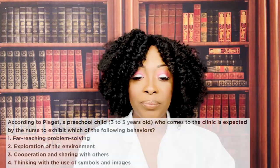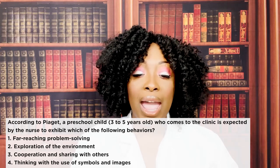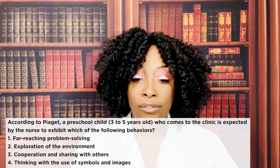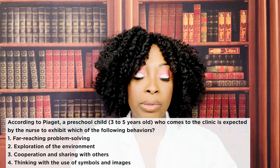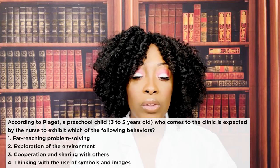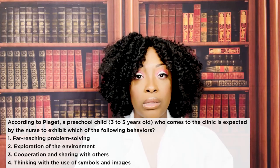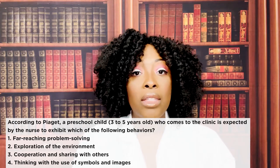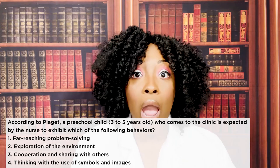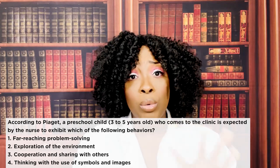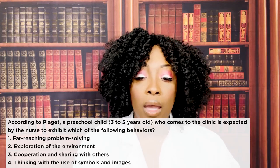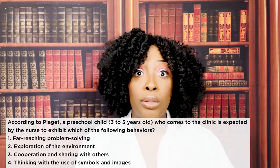Speaking of Piaget: according to Piaget, a preschool child three to five years old who comes to the clinic is expected by the nurse to exhibit which of the following behaviors? One, far-reaching problem solving; two, exploration of the environment; three, cooperation and sharing with others; or four, thinking with the use of symbols and images. The correct answer is four — thinking with the use of symbols and images. This is the pre-operational stage, expected between ages two to seven.